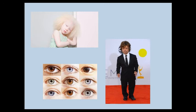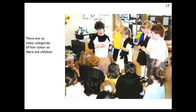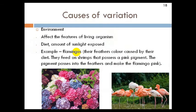Having dwarfism does not make a person less human — he is normal, just special compared to others. For hair colour, there are many categories. Now, the causes for variation: the environment is one cause. It affects the features of living organisms, such as through diet and the amount of sunlight exposure.